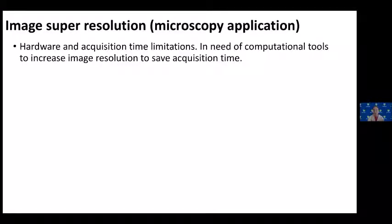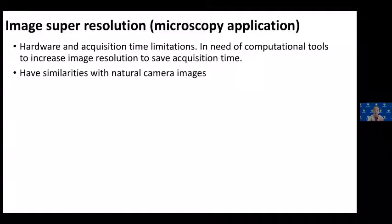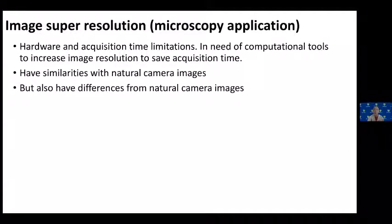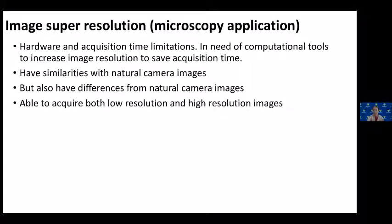The idea is to acquire images fast but with less detail — a low resolution image — and send those into a trained network that outputs a high resolution counterpart. Bio images from fluorescence microscopy have some similarities with natural camera images but also many differences due to different optics pathways and acquisition methods. Uniquely, we can easily adjust acquisition parameters with our hardware to acquire both low and high resolution images of the same field of view, making it straightforward to obtain training data pairs for the model.